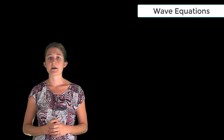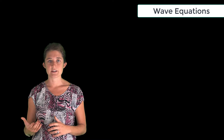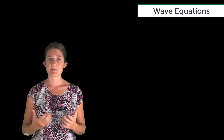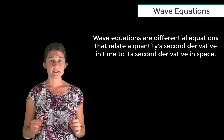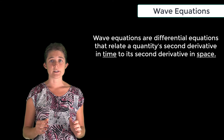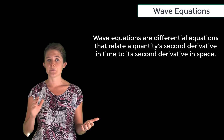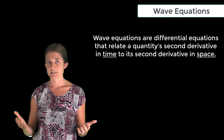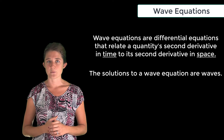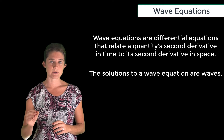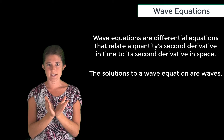The next thing we're going to do in this module is derive the wave equations for the electric and magnetic fields from Maxwell's equations. Wave equations are differential equations that relate a quantity's second derivative in time to its second derivative in space. The solutions to these equations are waves — sinusoidal in both time and space.